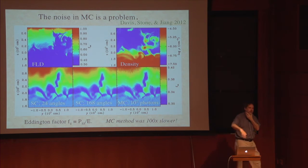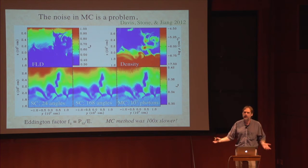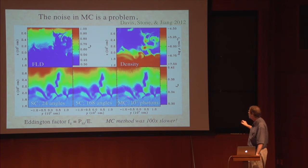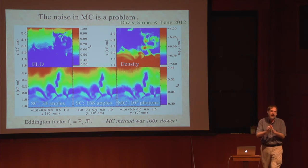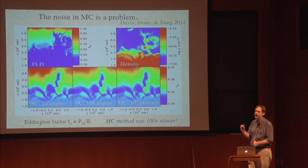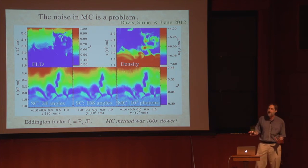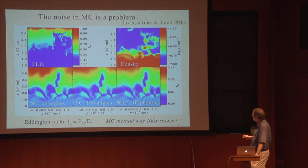If you're doing radiation hydrodynamics and you're getting one percent fluctuations in the pressure because of Monte Carlo noise, that's going to generate a tremendous number of sound waves and interact with the turbulence. We're taking the second moment of I divided by the zeroth moment, looking for slight asymmetries, and requiring those to be accurate to fractions of a percent — that's very, very challenging. If you're not in a radiation pressure dominated regime, this noise probably wouldn't matter. This is what I mean by noise mattering in applications like radiation pressure dominated discs.